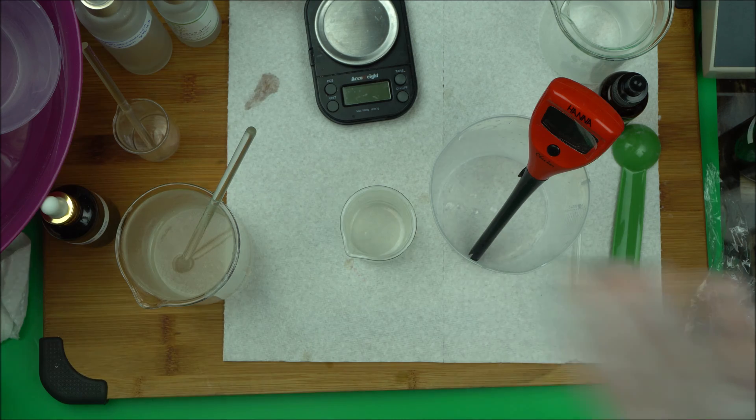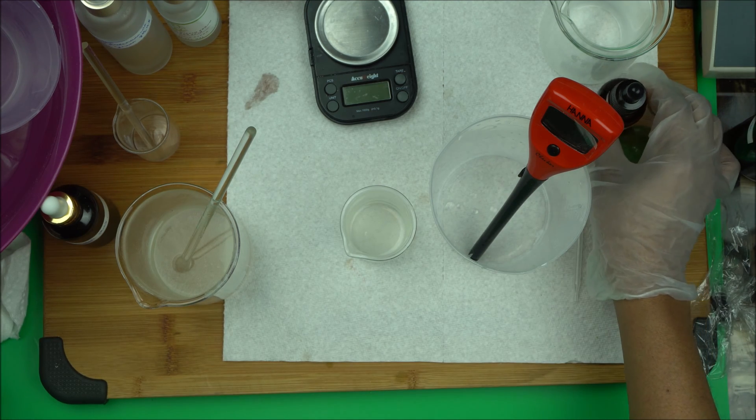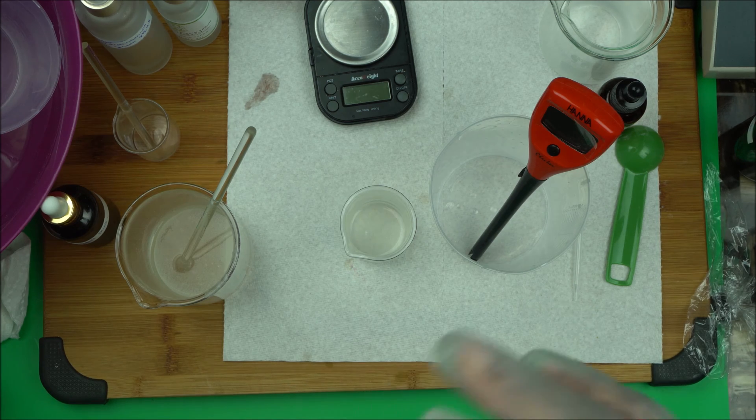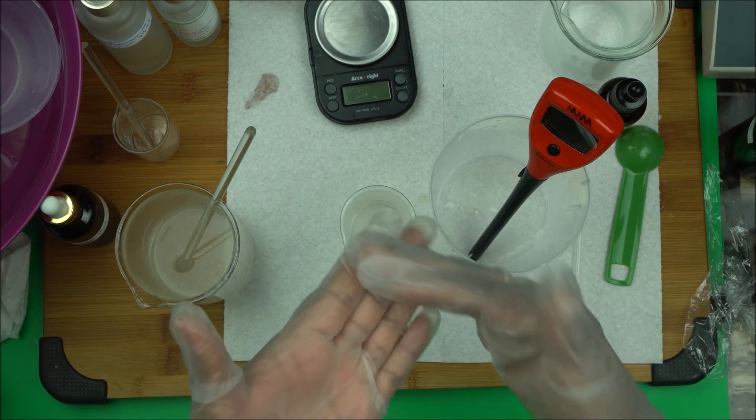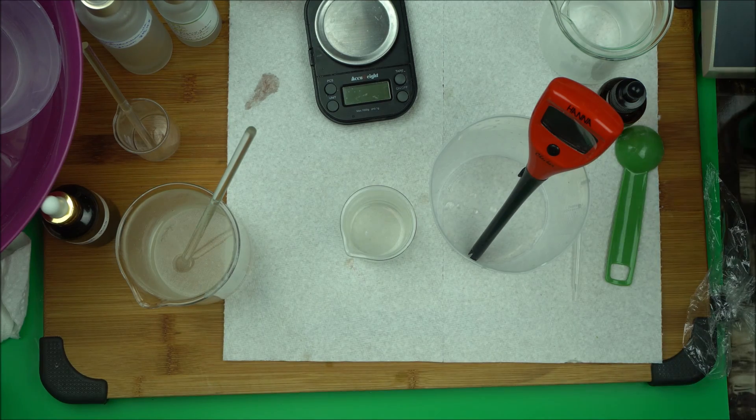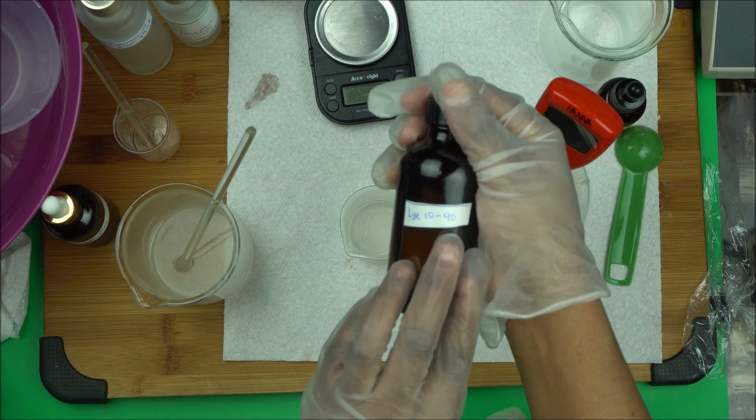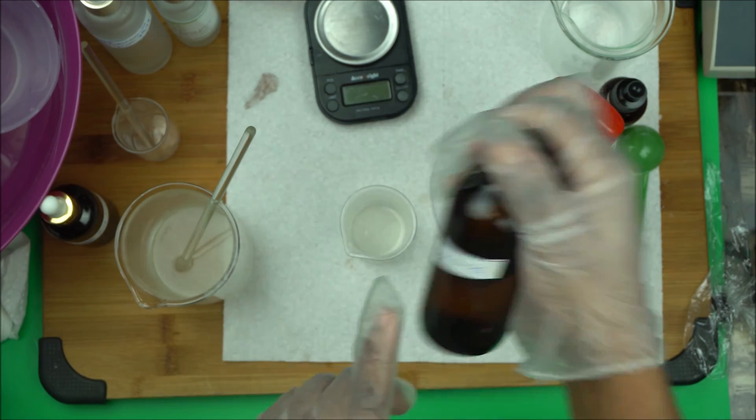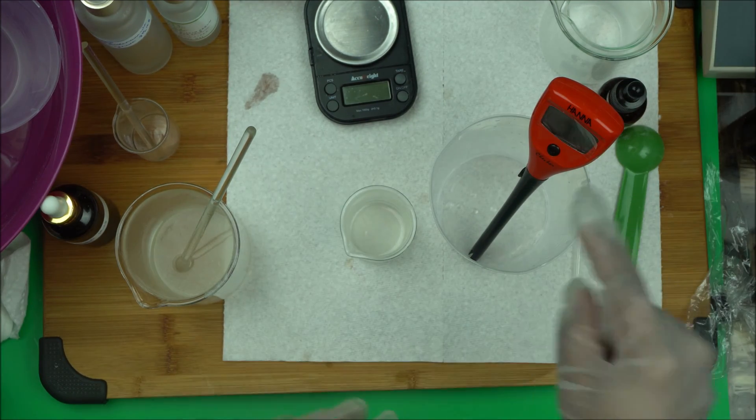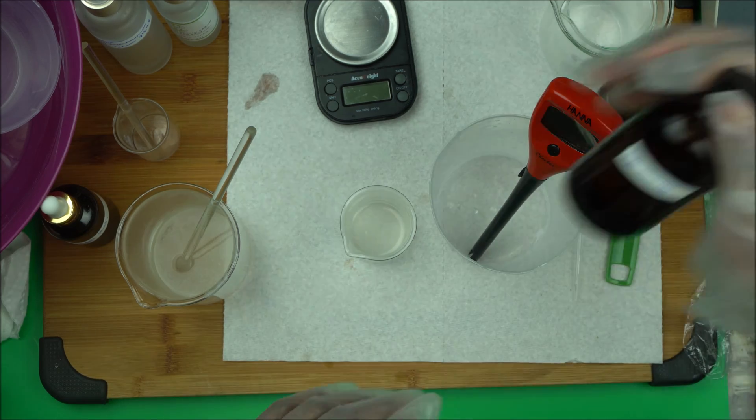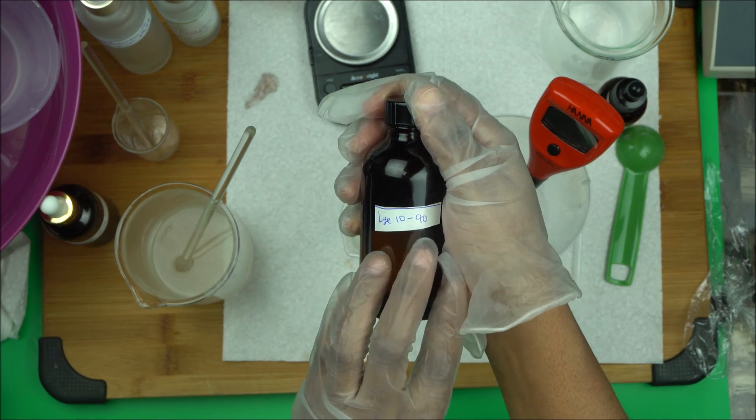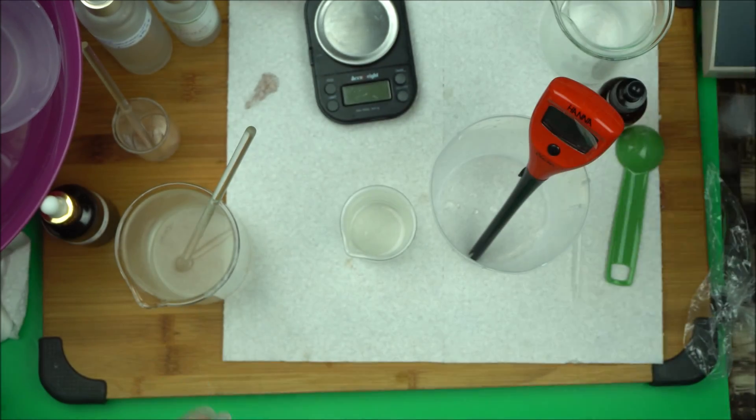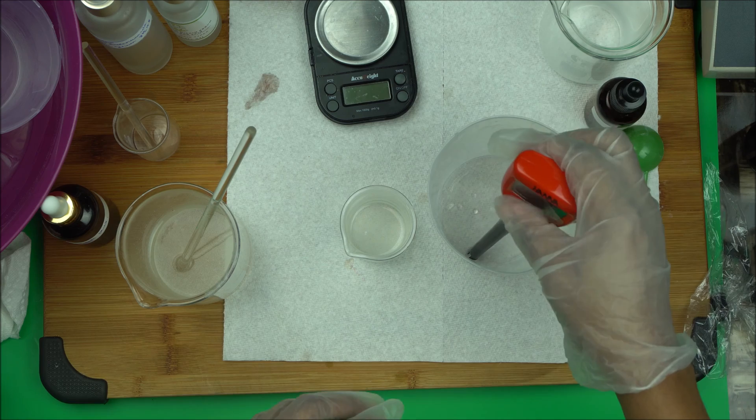If you have to reduce the pH of your serum, use citric acid or lactic acid to reduce it. But if you have to bump the pH up, use lye solution 10 to 90. I have a link in the description box below for how to make this solution. Because I need to increase it, I will be using lye solution 10 to 90, meaning 10% lye, 90% water. So I am going to add just one drop to it.